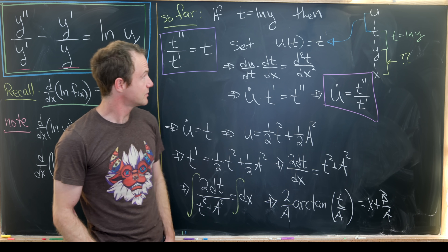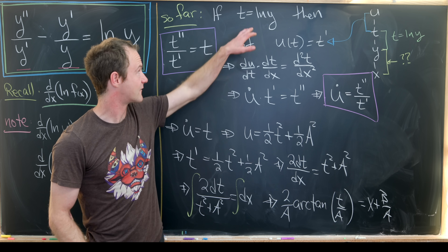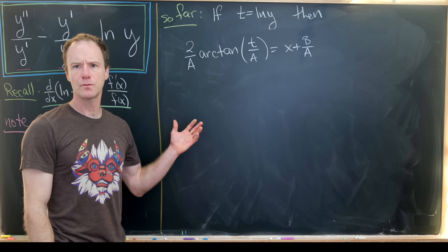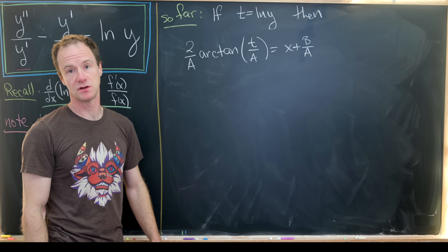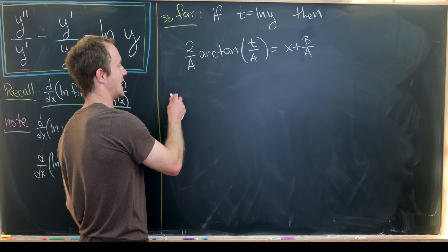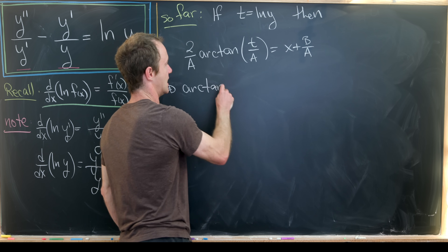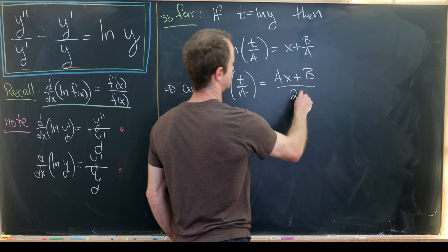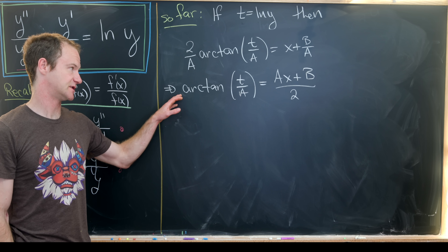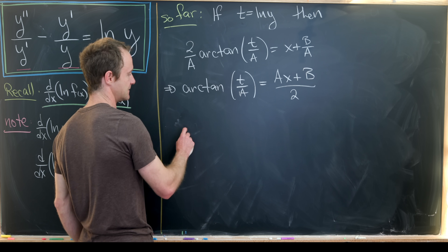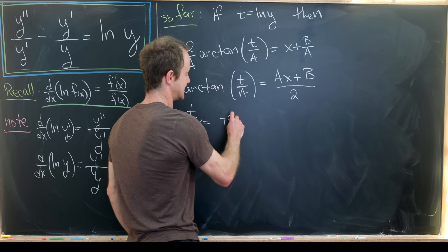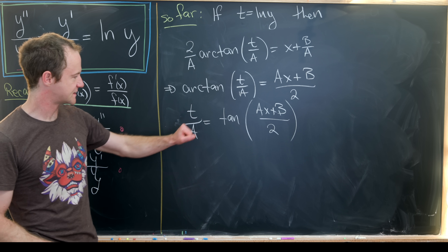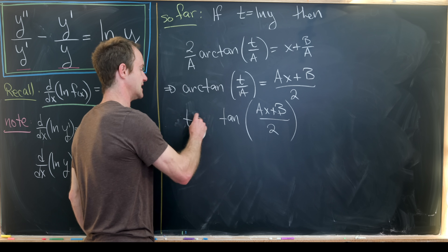Now we're essentially home free: we can solve for t and then use t = ln(y) to solve for y. Starting from (2/a) · arctan(t/a) = x + b/a, multiply both sides by a/2 to get arctan(t/a) = (ax + b)/2. Taking the tangent of both sides gives t/a = tan((ax + b)/2).